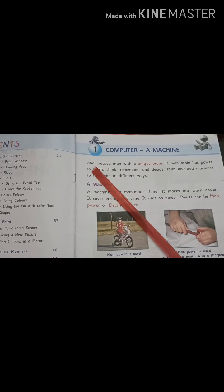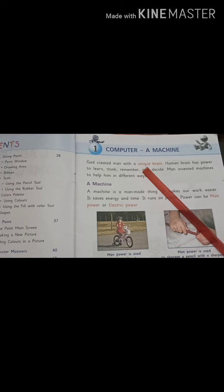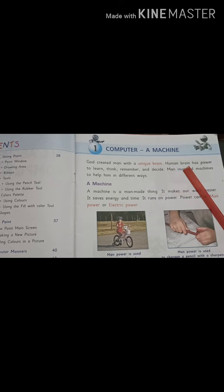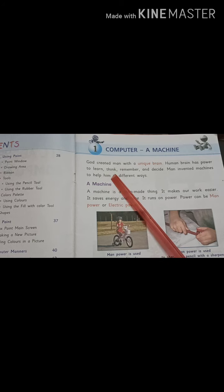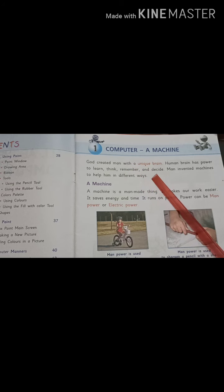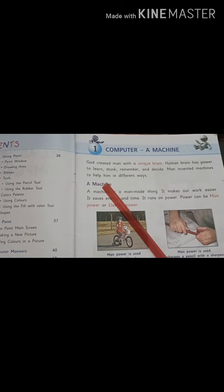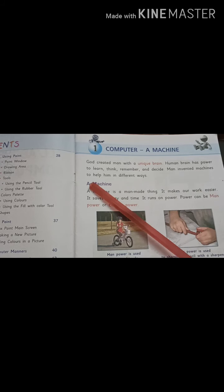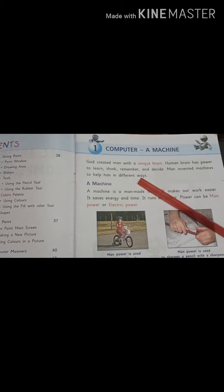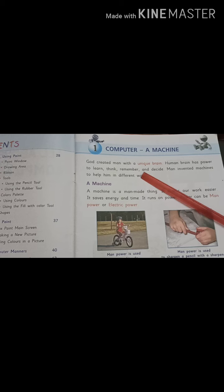See students, God has created man, that is us, isn't it? And we all have our own brains and we are unique. We are different from each other. Then human brain, that is our brain, has power. We have the power that we are able to learn, we are able to think, we can remember things, we can take decisions. In the same way, human beings, man, we have invented machines to help ourselves in different ways. We have created, man has created so many machines which can help us in different ways. You have seen various things like washing machine, TV, fridge, computer systems. So all these machines are able to help us in different ways. So now let's see what is a machine.